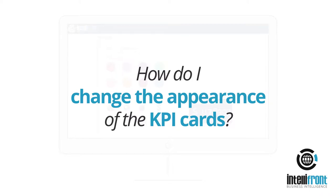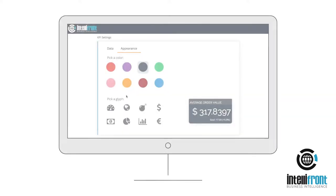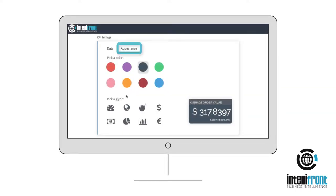How do I change the appearance of the KPI cards? Using IntelliFront BI, you can customise the colour and the background glyph of your KPI cards to make them stand out. Simply go to the KPI settings and select the Appearance tab to make your selections.